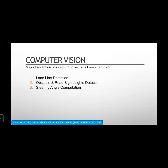The major perception problems to solve using computer vision are three: lane line detection, obstacle and road sign and light detection, and steering angle computation. The lane line where we are going to move must be detected properly. We also need to see obstacles in the planned path, and take into account all road signs such as zebra crossings and other road markings.